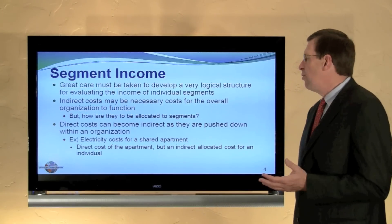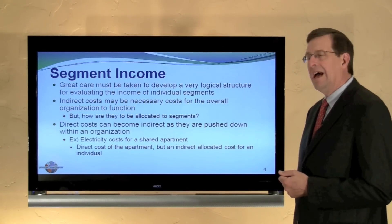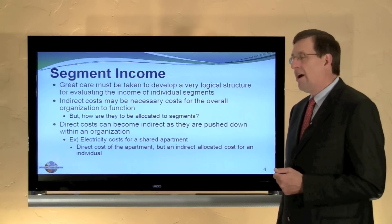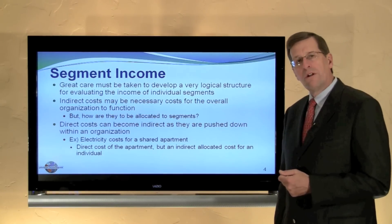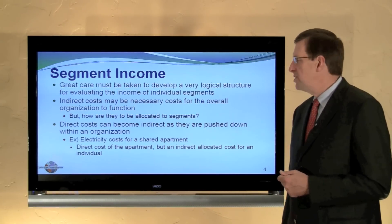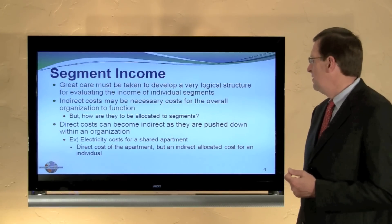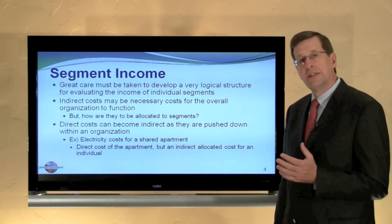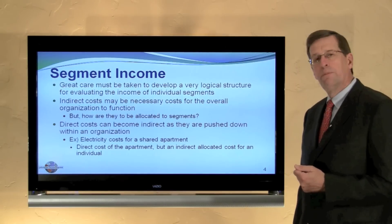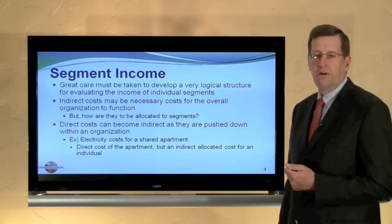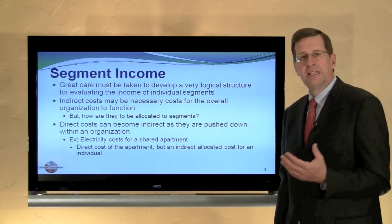In evaluating segment income, great care must be taken to develop a very logical structure. Indirect costs, for example, may be a necessary cost for the overall organization to function, but there's a question of how they should be allocated to individual segments. Further, direct costs can become indirect as they are pushed down within an organization. It's easy to overlook this facet.